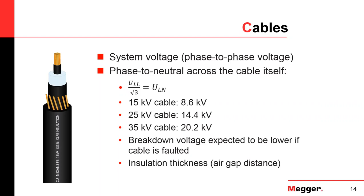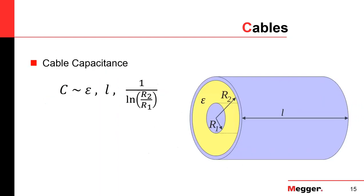The insulation thickness is related to this problem, because certain methods rely on the ability to actually create a flashover artificially at the fault location to find it. The air gap distance — the distance between the conductor and the neutral — can play a role in that.